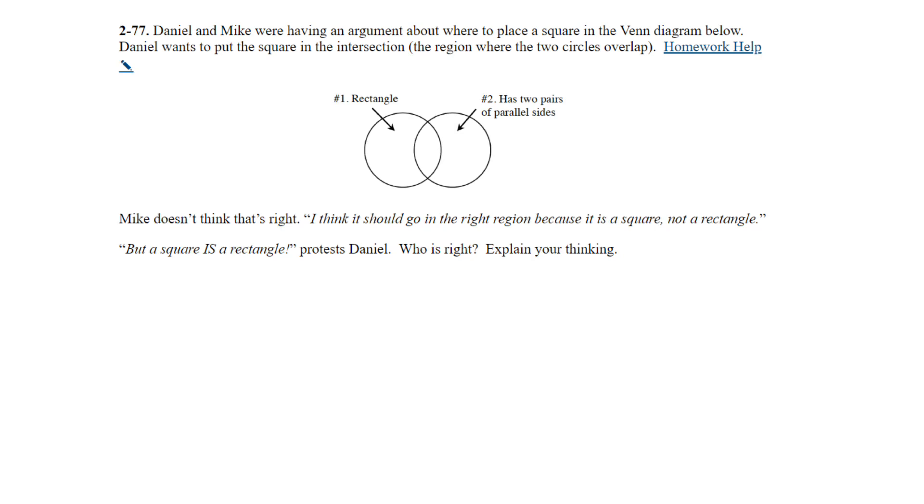Question 77. Daniel and Mike were having an argument about where to place a square in the Venn diagram below. Daniel wants to put the square in the intersection, the region where the two circles overlap. Mike doesn't think that's right. I think it should go in the right region because it is a square, not a rectangle. But a square is a rectangle, protested Daniel. Who is right? Explain your thinking. So once again, just make sure we have the names correct here. Daniel wants to put the square in the intersection. So right here, this is where Daniel wants to put it. And then Mike doesn't think so. Mike thinks it goes over here where it has two pairs of parallel sides, but it's not a rectangle.